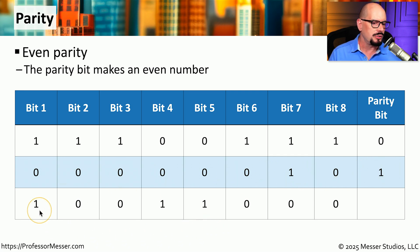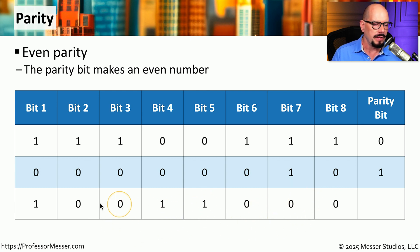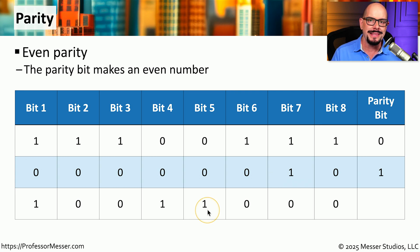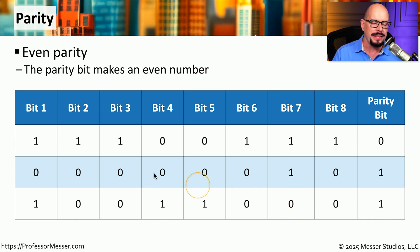For the third byte: 1, 0, 0, 1, 1, 0, 0, 0. Counting the ones, there are 3 — an odd number. So to make this even parity, our parity bit needs to be 1. And now we have parity calculated for all three of these bytes on our system.